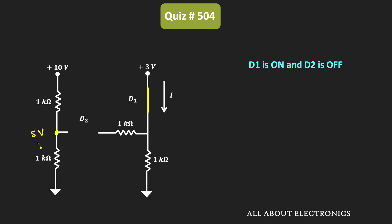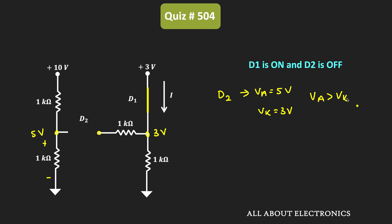Using the voltage divider rule, it is easy to find the voltage at this node. So for diode D2, the voltage at the anode is equal to 5V. Since diode D1 is in the ON condition, the voltage at its node is equal to 3V, so the cathode of D2 is equal to 3V. Since the anode voltage (5V) is still more than the cathode voltage (3V), diode D2 is also in the ON condition — a contradiction.